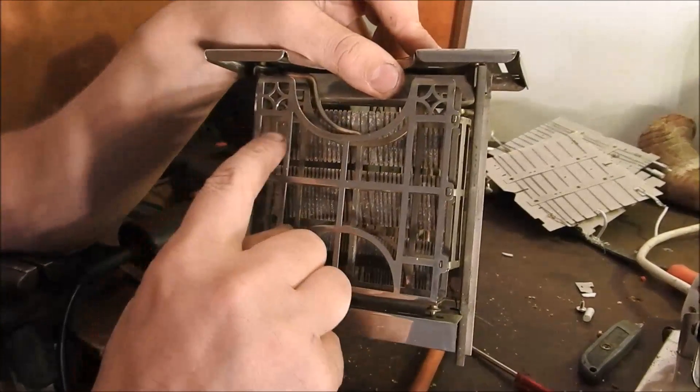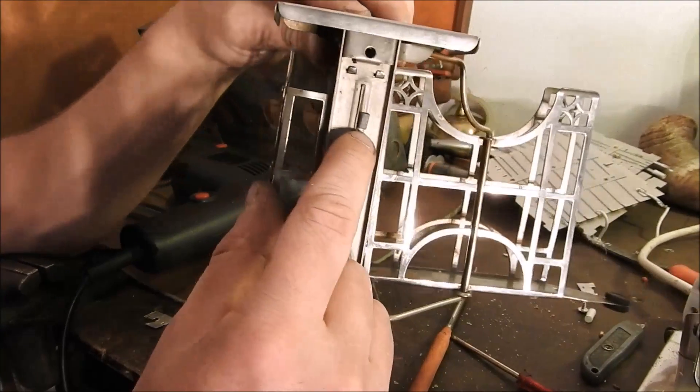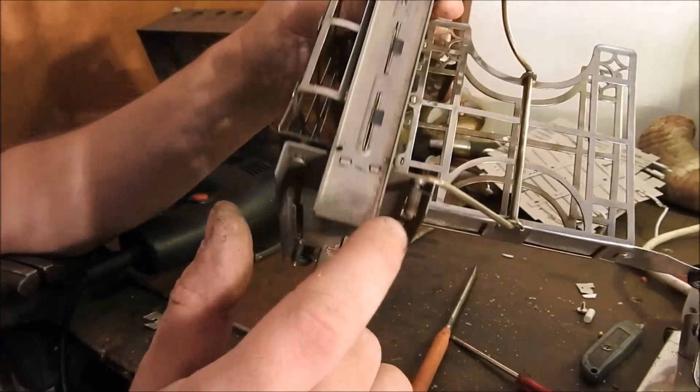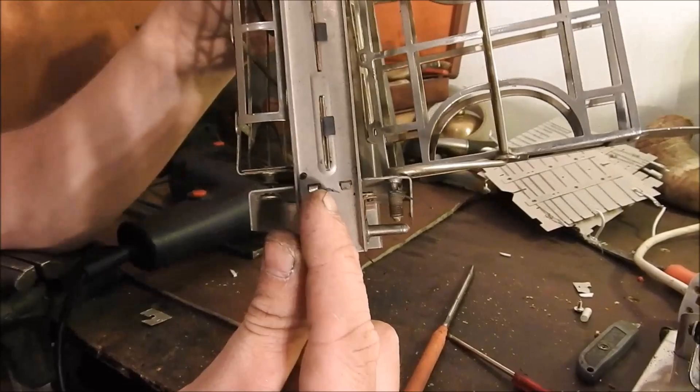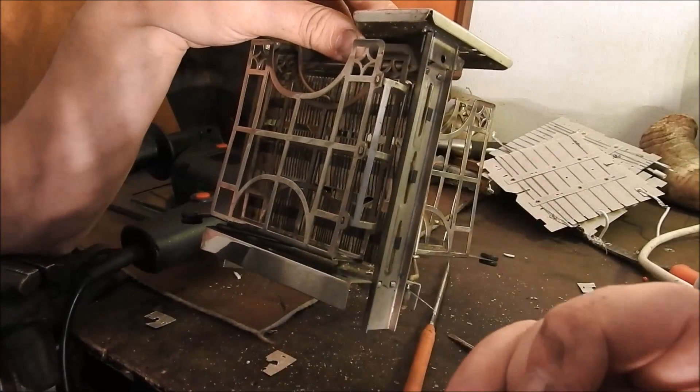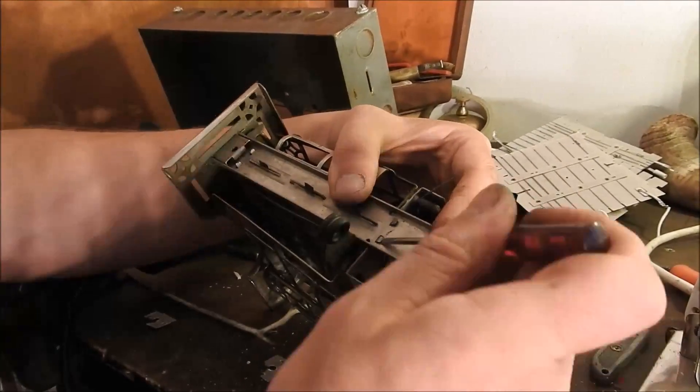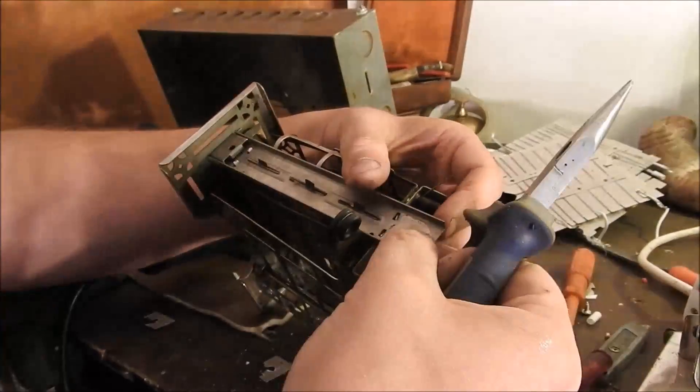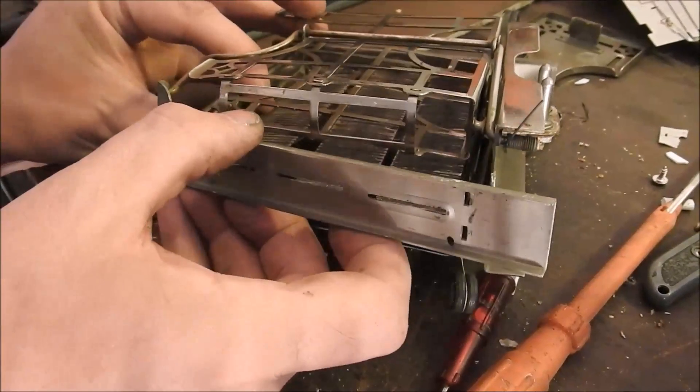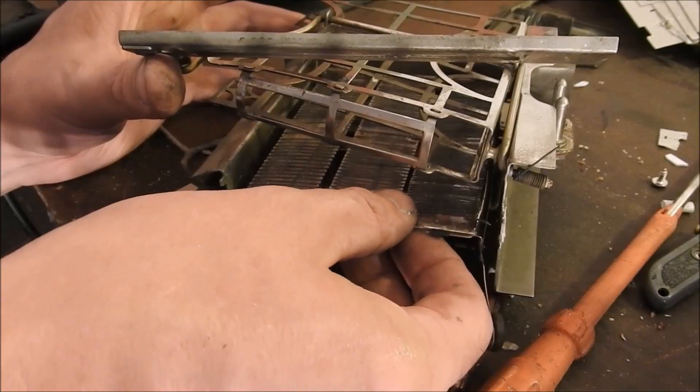Next on the side of the filament cards, we have these simple bent holders here. So we'll bend those back plus bend the holders here. So this panel will come off and we can extract the cards. And now we can slide the filament cards out.